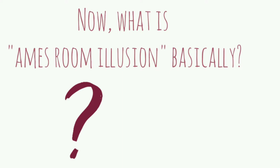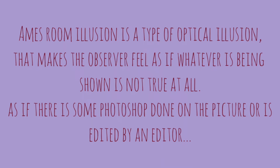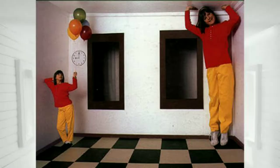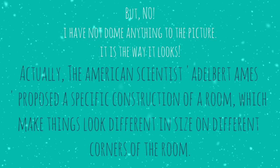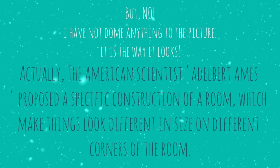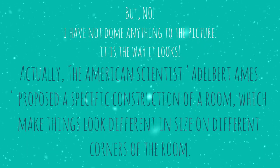What is the Ames Room Illusion basically? The Ames Room Illusion is a type of optical illusion that makes the observer feel as if whatever is being shown is not true at all — as if there is some Photoshop done on the picture or it has been edited. You would be thinking the same too, as if editing has been done in the picture to make such an appearance. But no, nothing has been done to the picture. It is the way it looks.